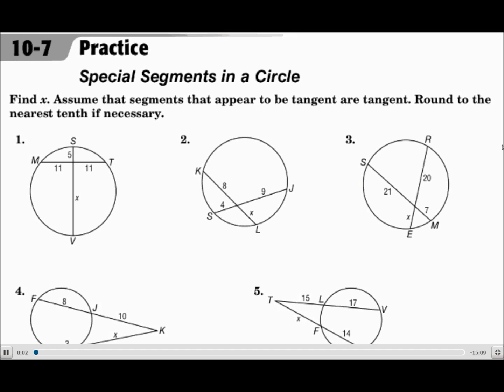This is lesson 10.7, Special Segments in a Circle. Your objectives are to find measures of segments that intersect in the interior of a circle and find measures of segments that intersect in the exterior of a circle.